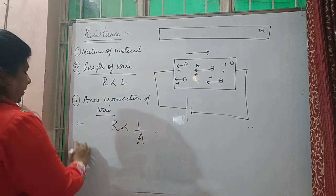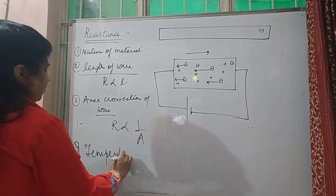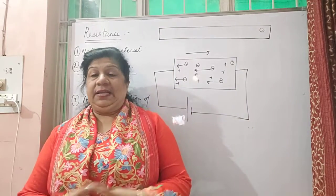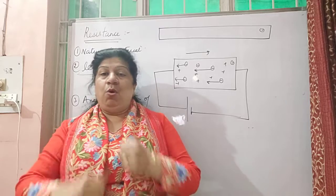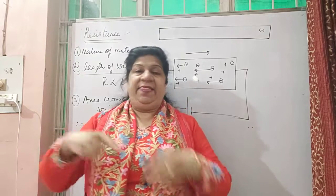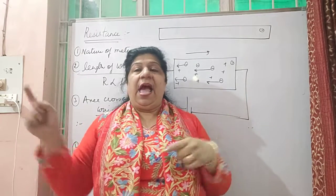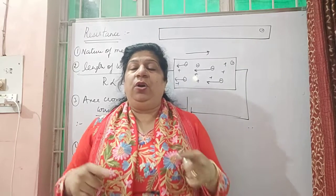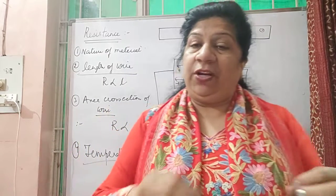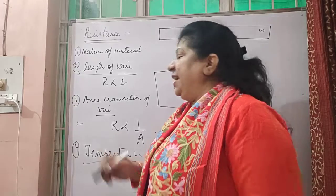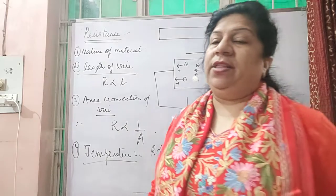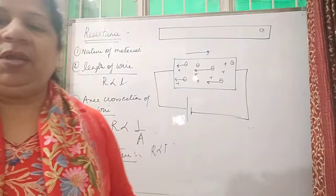Then we are talking about temperature. What happens is if you increase the temperature, the resistance also increases. When you increase the temperature, the electrons get energy and their motion becomes more haphazard. When they start moving more violently, they collide with each other more often than at a cooler temperature. So when they collide more, resistance increases. Therefore, resistance is also directly proportional to temperature — when temperature increases, resistance also increases.